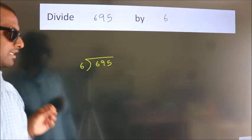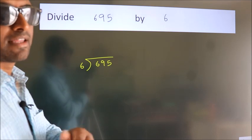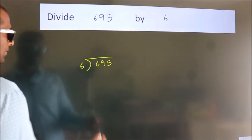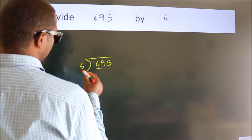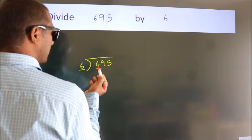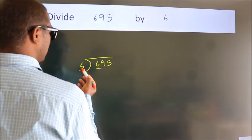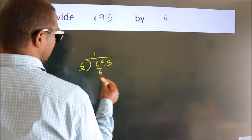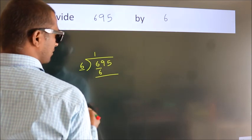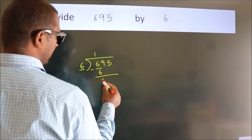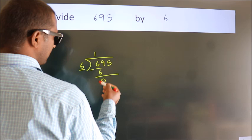This is your step 1. Next, here we have 6, here 6. When do we get 6? In 6 table, 6 once, 6. Now we should subtract, we get 0.